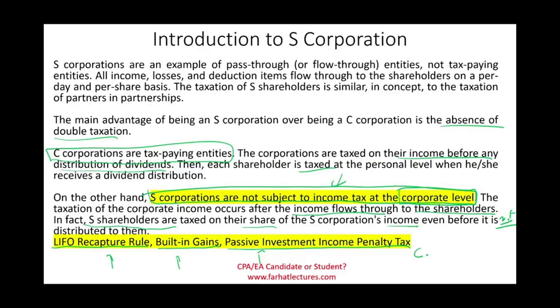Next, let's look at Form 1120-S — the S corporation's tax return — and the K-1, which shows how income is reported and transferred to investors. On Form 1120-S, you report income (say $100,000), then deductions like compensation, repairs, bad debt, etc. (totaling $30,000), leaving ordinary business income of $70,000. If there's no excess passive income or LIFO recapture, that $70,000 flows to shareholders.